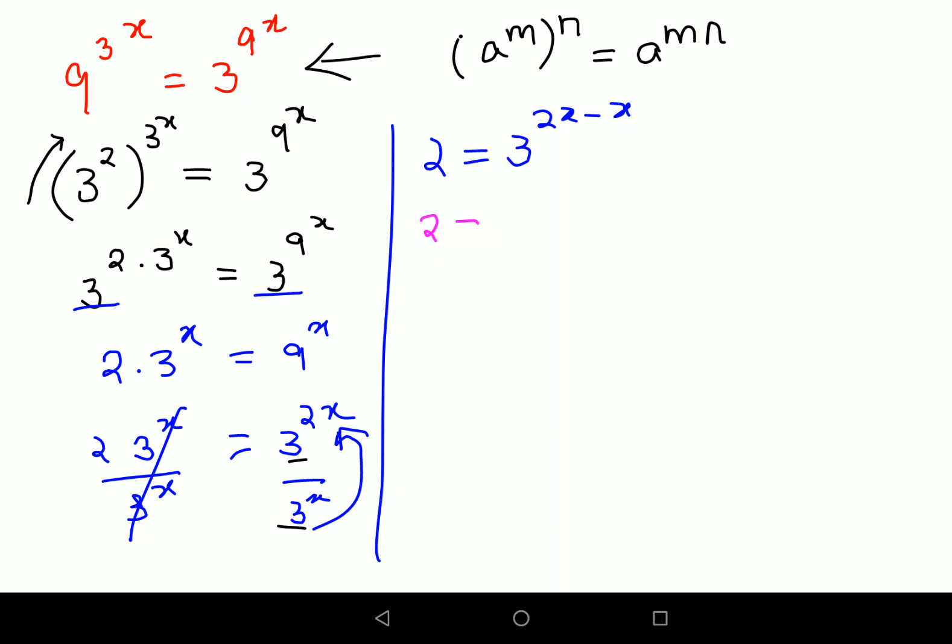So this has now come out to be 2 equals 3 raised to x. In order to find the value of x, let's take log on both sides. So log 2 equals... I can use the rule that log of any number raised to an index m gives m log a. So this becomes x log 3.